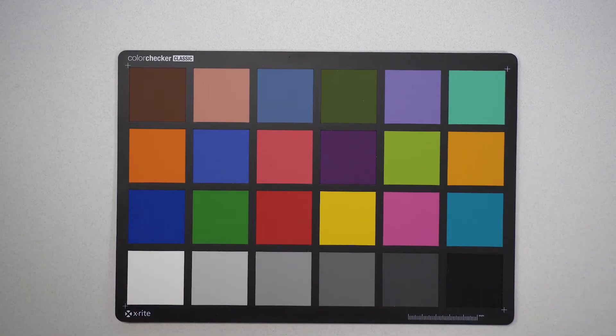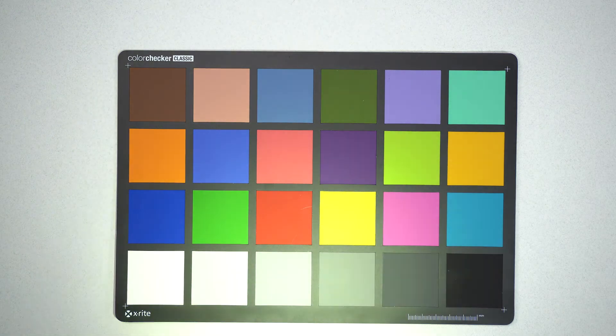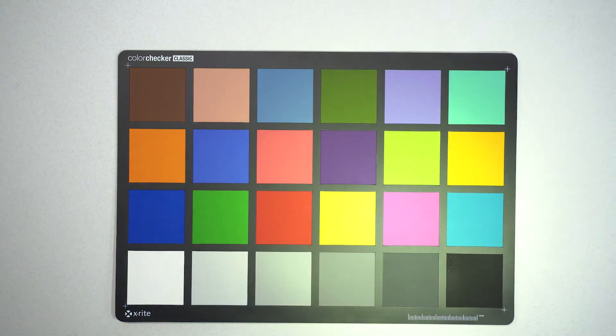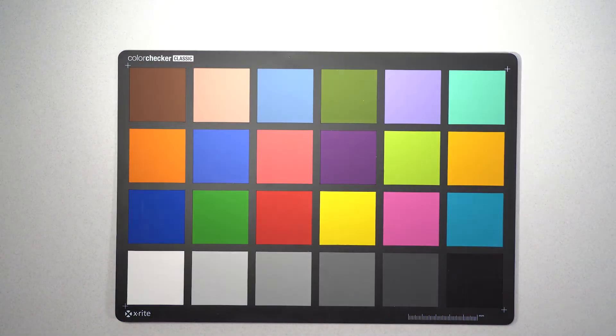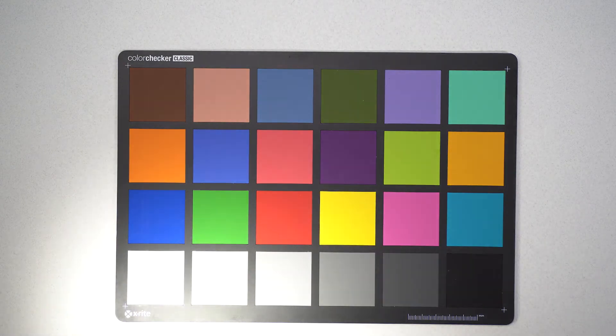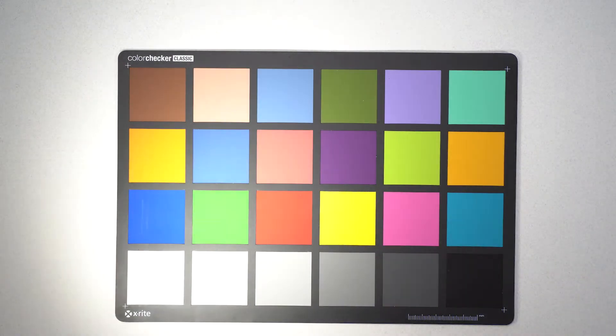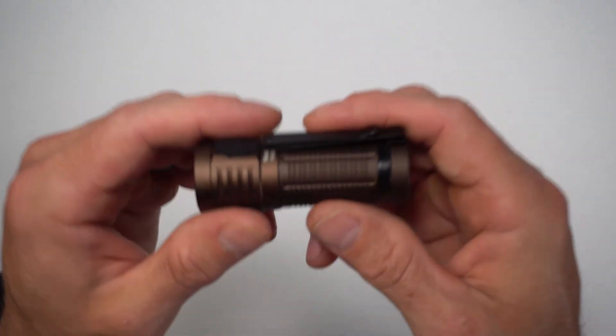Here, I've got a color checker. You can see what it looks like. Kind of blows the colors out a little bit compared to a Nichia, which does a little bit better job of rendering this color checker.